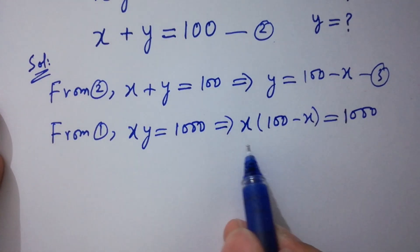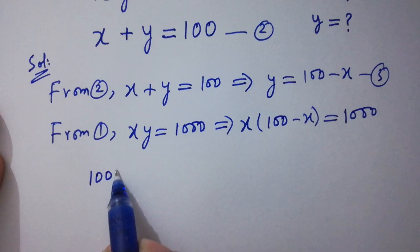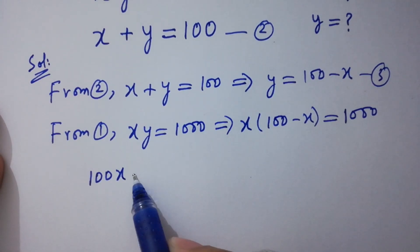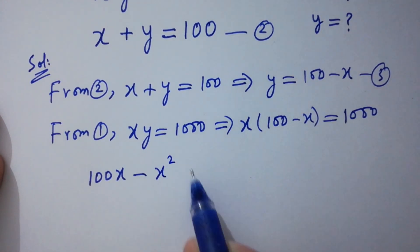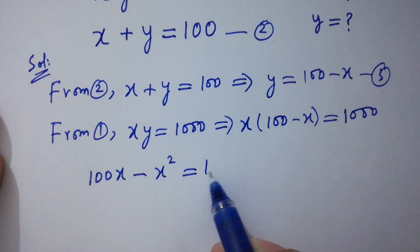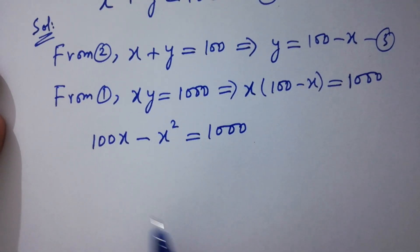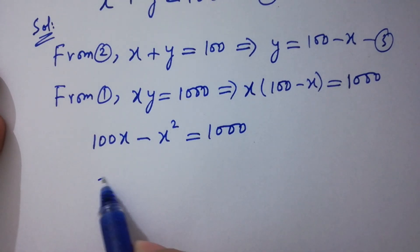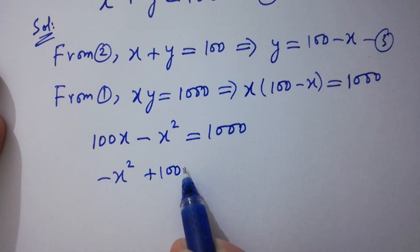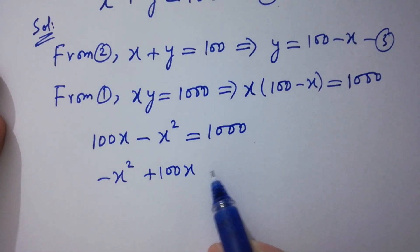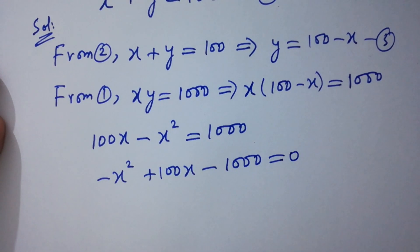Simplifying this: 100x minus x squared equals 1000, which gives minus x squared plus 100x minus 1000 equals 0.